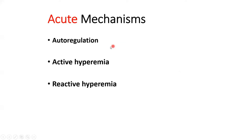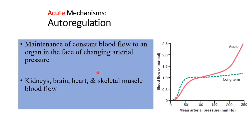In acute mechanisms, we study three: autoregulation, active hyperemia, and reactive hyperemia. Note that the sequence here differs from the Guyton textbook - it has been changed to be more student-learner oriented. Active and reactive hyperemia may already have been studied to some extent in high school.